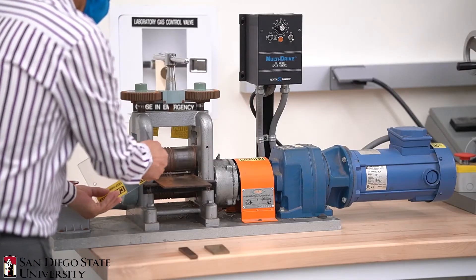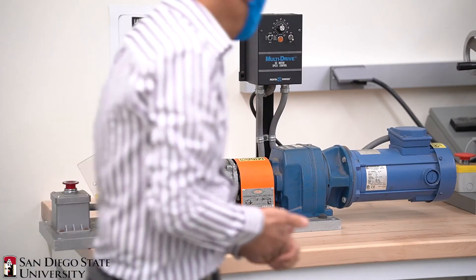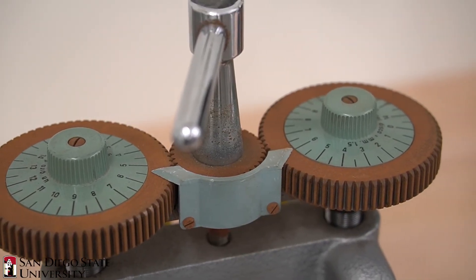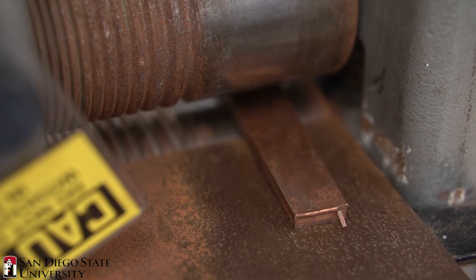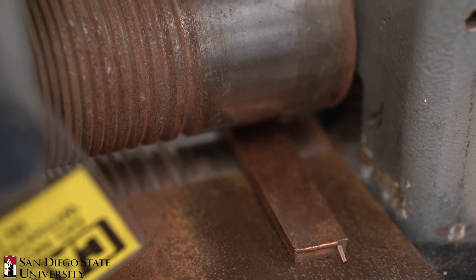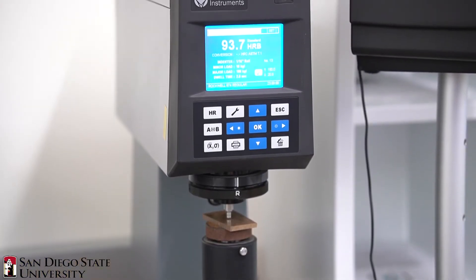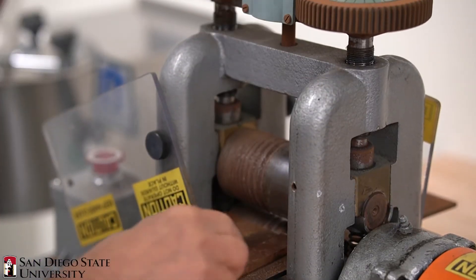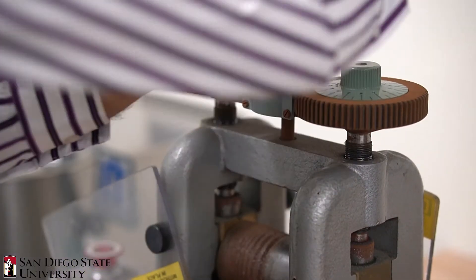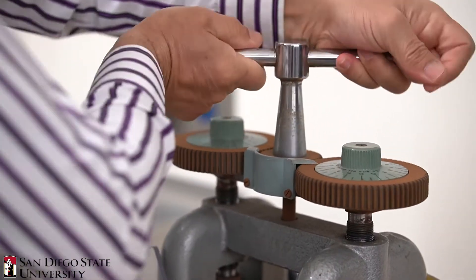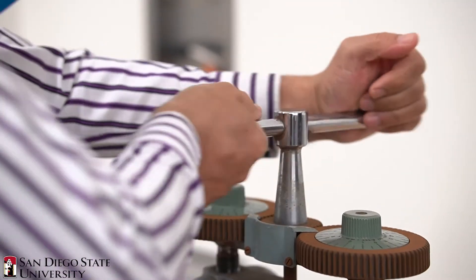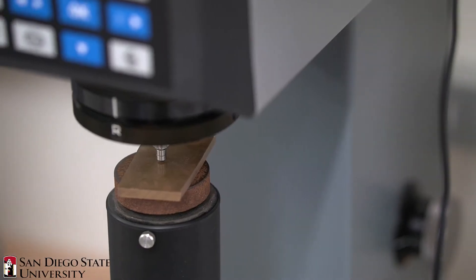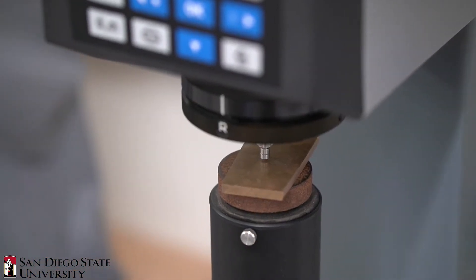The cold working lab allows students to compare mechanical properties with percent cold working of different materials. The cold working lab includes a cold rolling press and Rockwell hardness tester to demonstrate the change in material properties as cold working is applied. Brass and copper specimens are fed into the cold rolling press and the hardness of the samples are tested as the thickness is incrementally decreased. The resulting hardness versus cold work percent is used to characterize the materials for engineering applications.